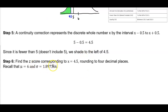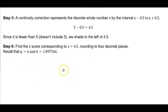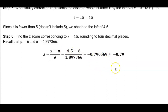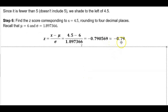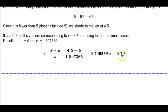Now we want to find the z-score corresponding to x equals 4.5, rounding the z-score to two decimal places and finding the area to four decimal places. Recall the mean is 6 and the standard deviation is 1.897366. We plug into our z-score formula: take 4.5, subtract the mean of 6, and divide by 1.897366. We get negative 0.790569, which rounds to negative 0.79. This z-score of negative 0.79 corresponds to 4.5 and lies to the left of 0. Now we want to find the area to the left of negative 0.79.